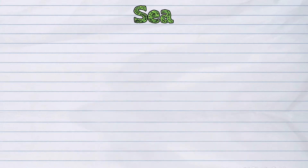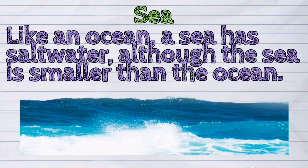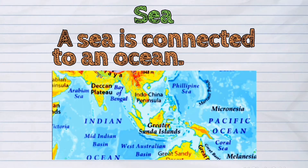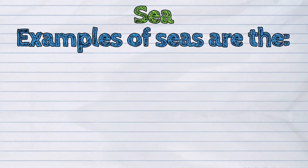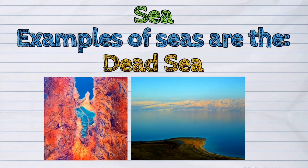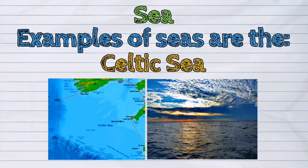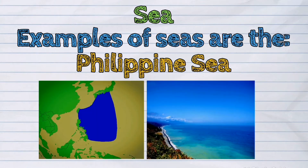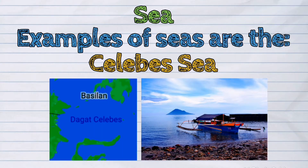Another water form is the sea. Like an ocean, a sea has salt water, although the sea is smaller than the ocean. A sea is connected to an ocean. Examples of seas are the Caspian Sea, the Dead Sea, and the Celtic Sea, found in different parts of the world. The Philippine Sea and the Celebes Sea are examples of seas in the Philippines.